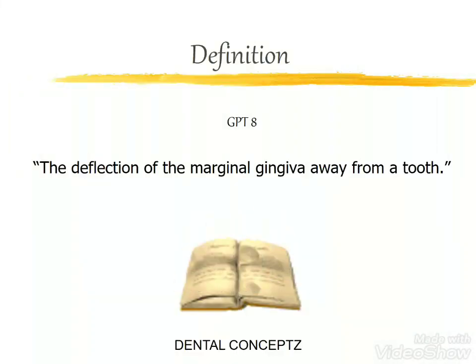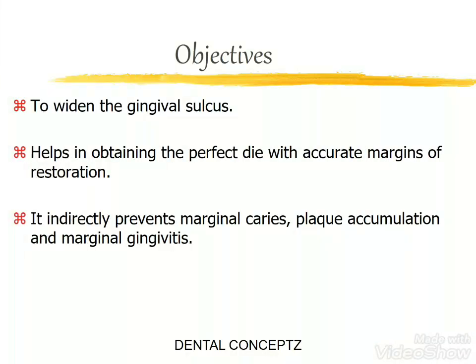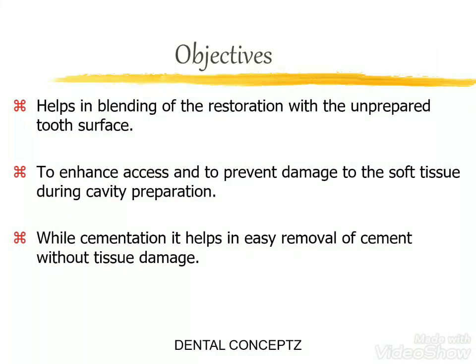Gingival retraction is the deflection of the marginal gingiva away from a tooth. The objectives of gingival retraction are: it is used to widen the gingival sulcus; it helps in obtaining the perfect die with accurate margins of restoration; it indirectly prevents marginal caries, plaque accumulation, and marginal gingivitis. It also helps in blending of the restoration with the unprepared tooth surface.